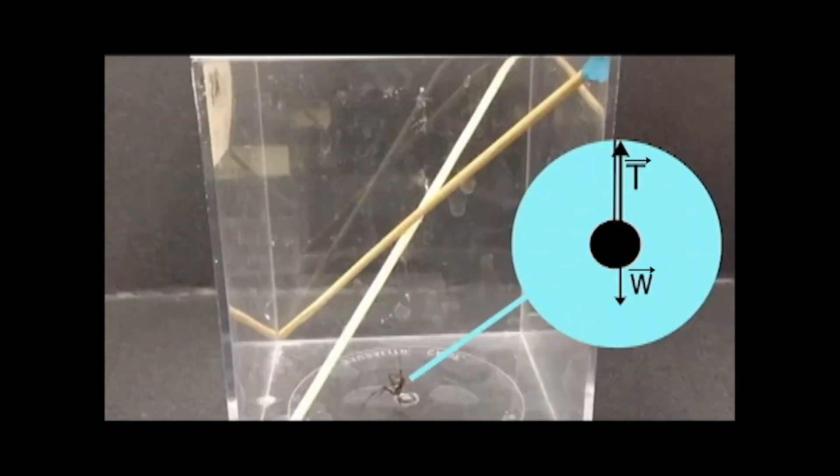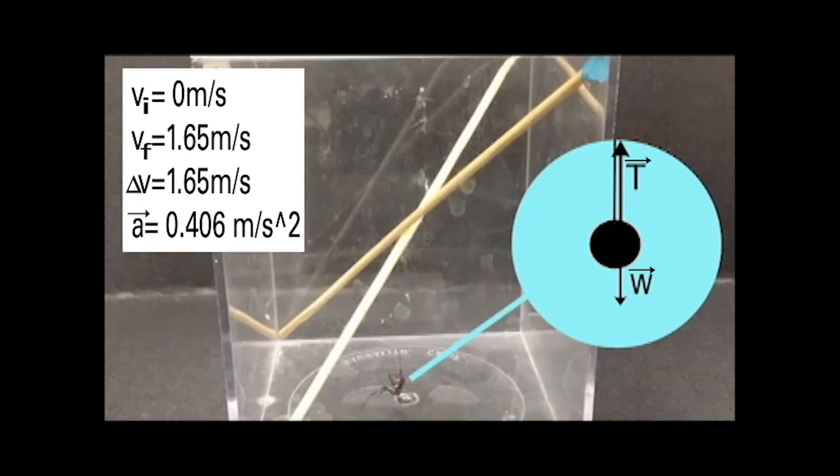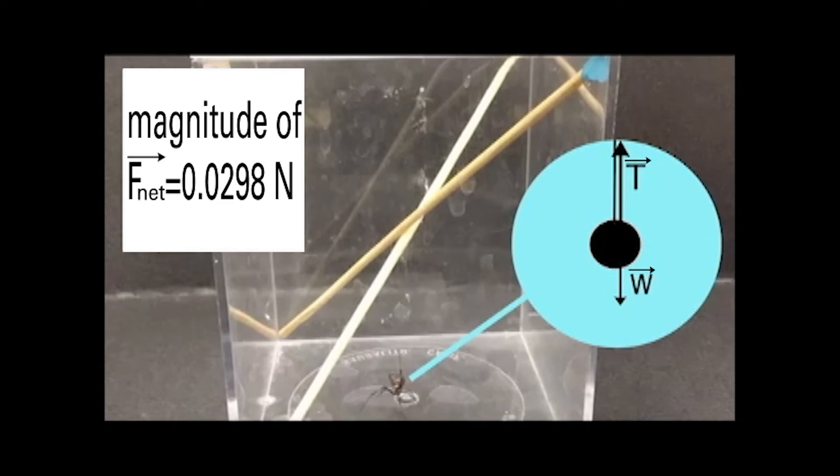Scenario 3. When the spider ascended the box, the net force was pointing upwards, and the spider had tension and weight forces acting on it. Tension force was much greater than weight force. The spider's movements were analyzed to determine the displacement of the spider over time, its velocity, and its acceleration. These pieces were put into Newton's Second Law to find the net force acting on the spider.